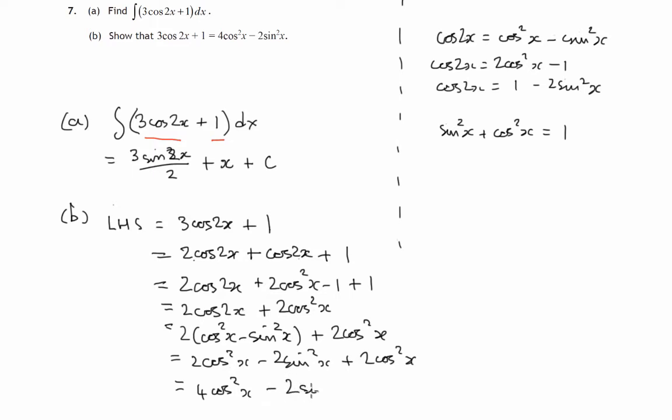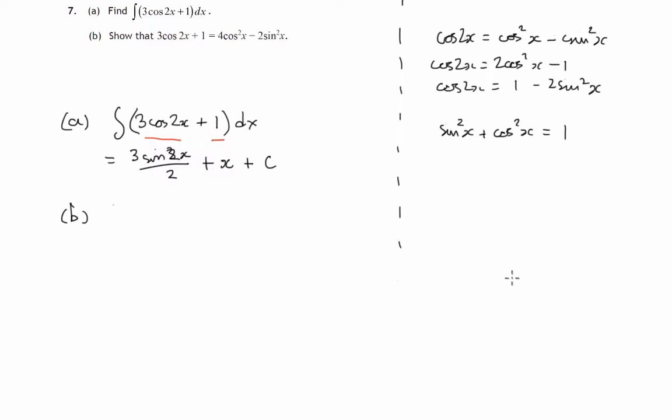So there's a slightly different method of doing it. Finally, let's just look at one last way that we could do this, and that starts with the right hand side of this identity, where we're looking at four cos²x minus two sin²x.